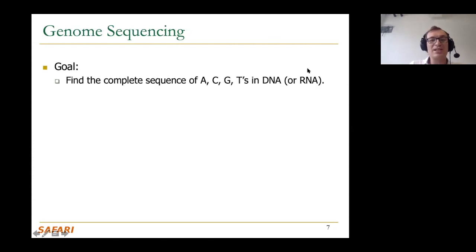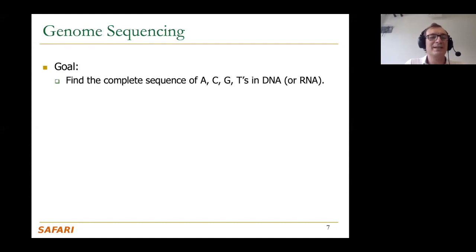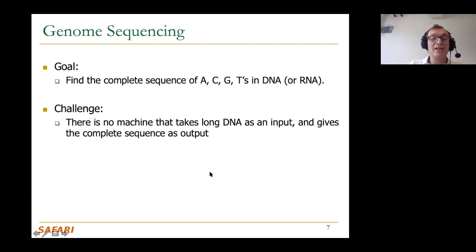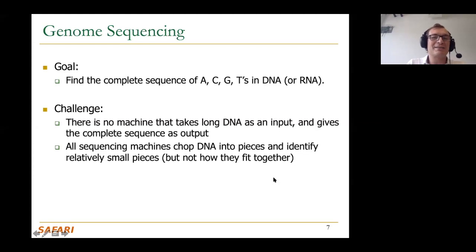What is genome sequencing? The goal is to find the complete sequence of base pairs in DNA or RNA. The challenge is that today we do not have a machine that takes a long DNA as input and gives a complete sequence as output. The human DNA is 3.2 billion base pairs long, and there is no machine that gives you the entire sequence. All machines today chop the DNA into pieces — long or short — because that's the nature of current technology.